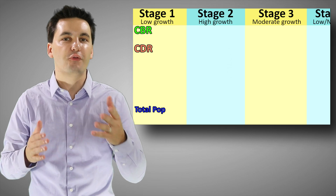The demographic transition model is broken into different stages. Each stage looks at different economic and social developments that happen in a society.